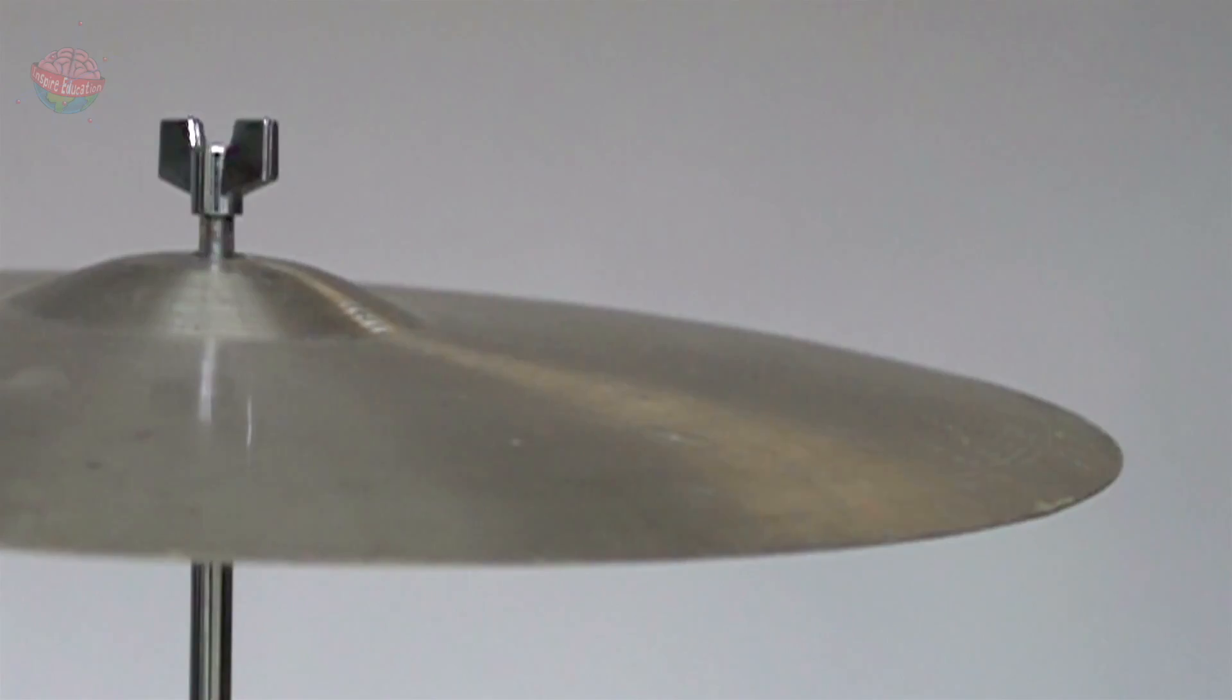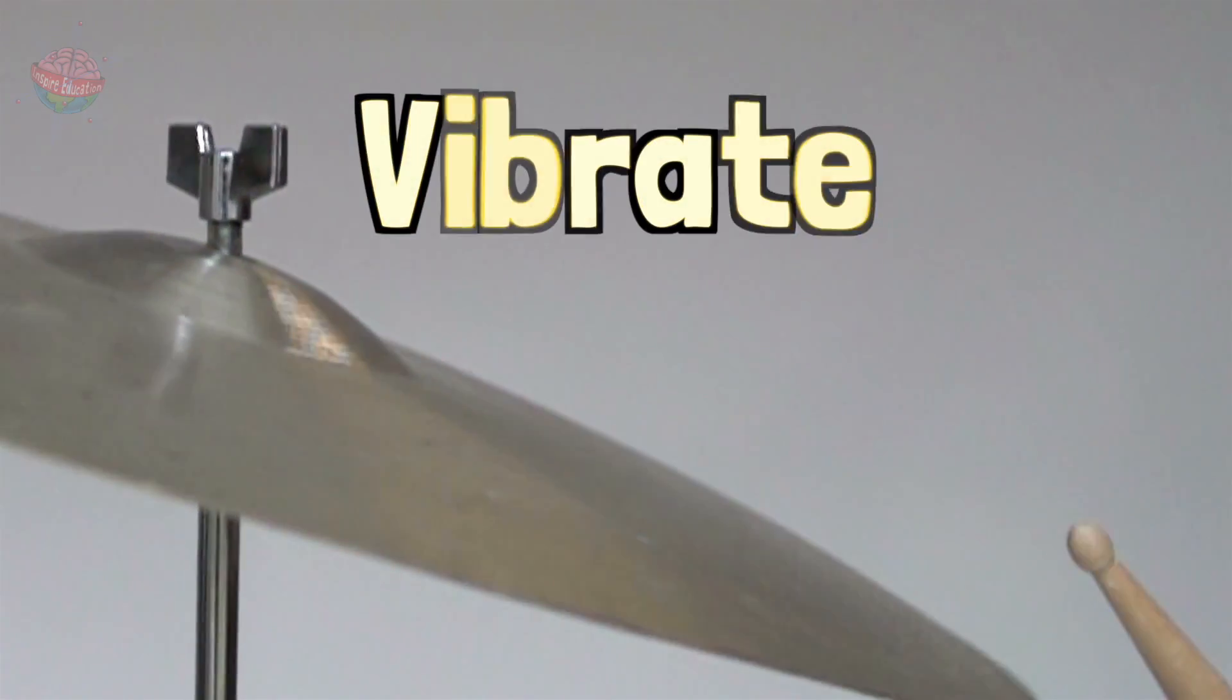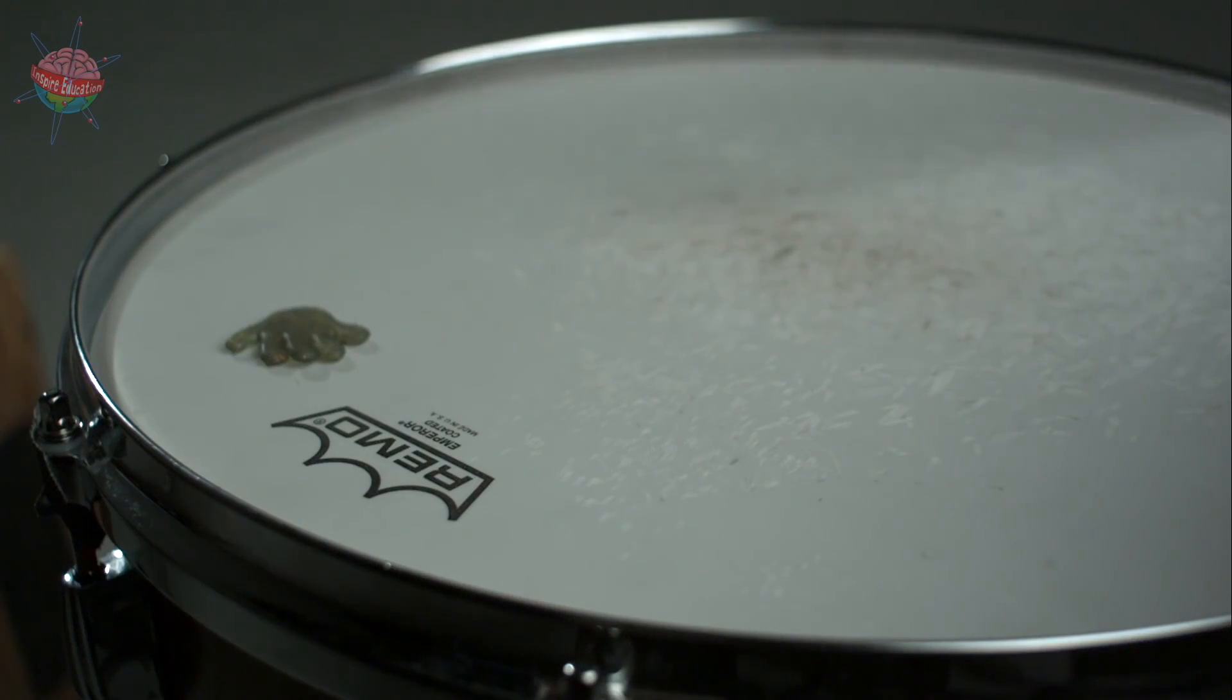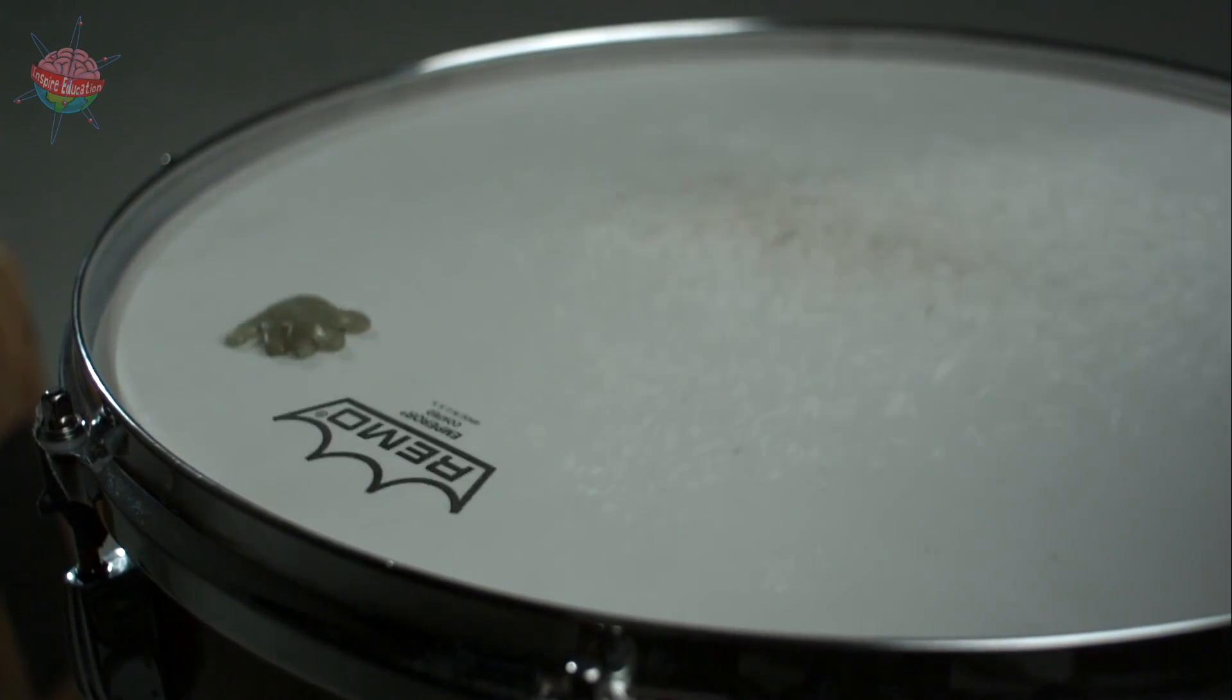To make a sound, we first need to get an object to vibrate. A drum won't make a sound on its own, but if we hit it with a drumstick, the skin vibrates, moves quickly from side to side or up and down.